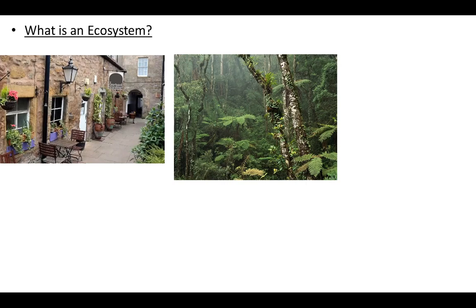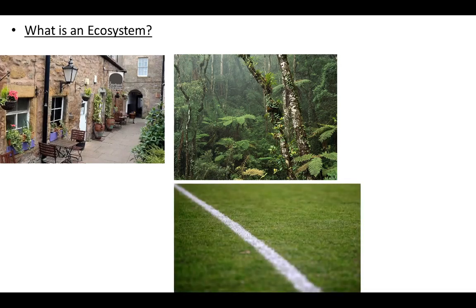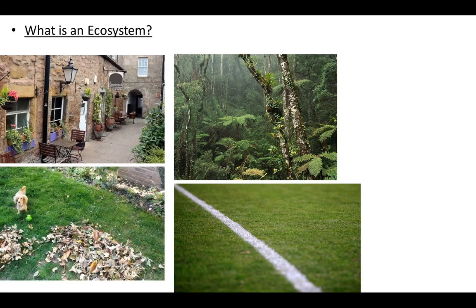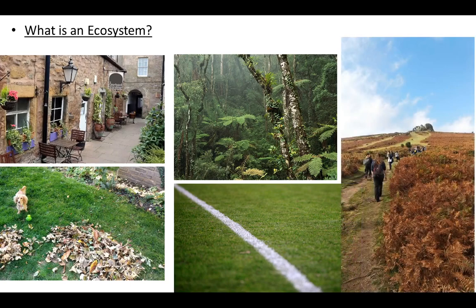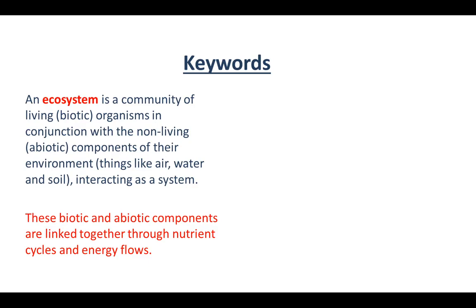The rainforest is an ecosystem, but so is a street, because it has living elements such as plants and animals, and non-living elements like the climate and rock type. A school football pitch is also an ecosystem — whilst you might not see many animals there, there will be some, and certainly there are plants. My back garden is an ecosystem too. An ecosystem can be lots of different areas — it is a community of living organisms that interact with each other, plus the non-living elements.